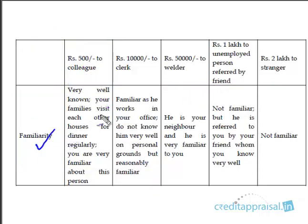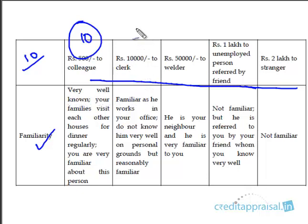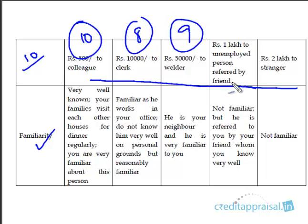What is the familiarity level with each of the five cases? For the 500 lent to your colleague, who is also a family friend you visit weekly — you give him a score of 10. The clerk in your office is reasonably familiar, maybe an 8. The neighbor you interact with daily, maybe a 9. The person referred by a friend you don't know directly — maybe a 5. And the total stranger — 0.